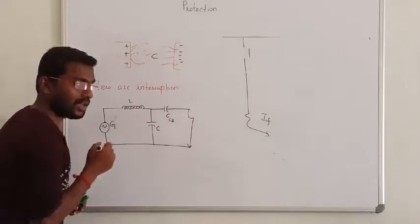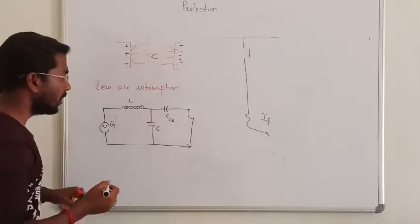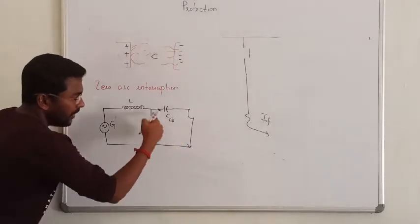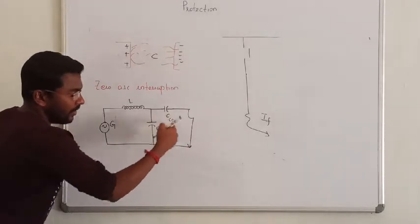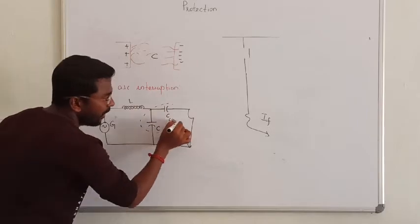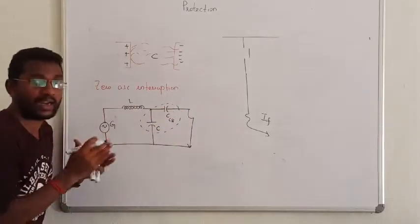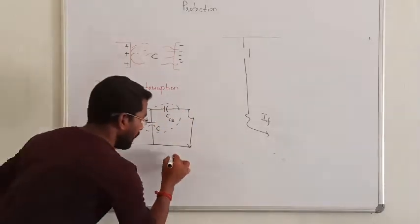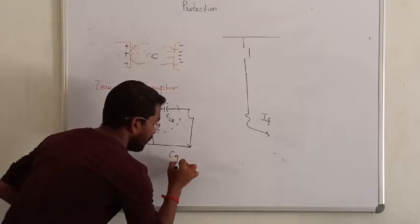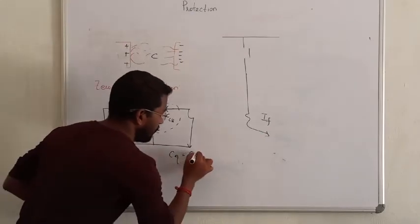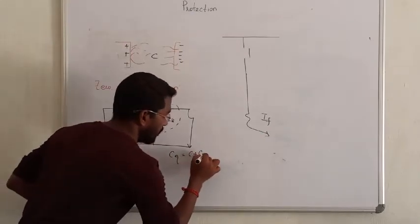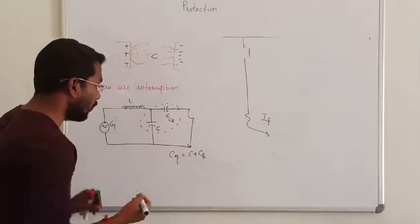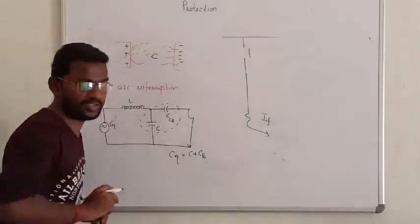This is the transmission line. If the circuit breaker capacitance is connected in parallel with the transmission line capacitance, then what will be the value of C equivalent? The value of C equivalent will simply be the addition of C plus C. That is the overall capacitance.